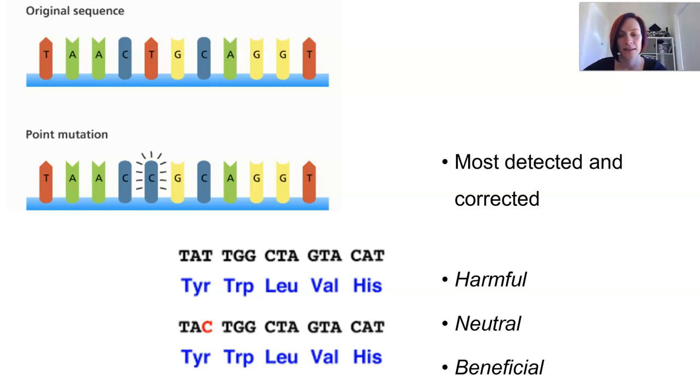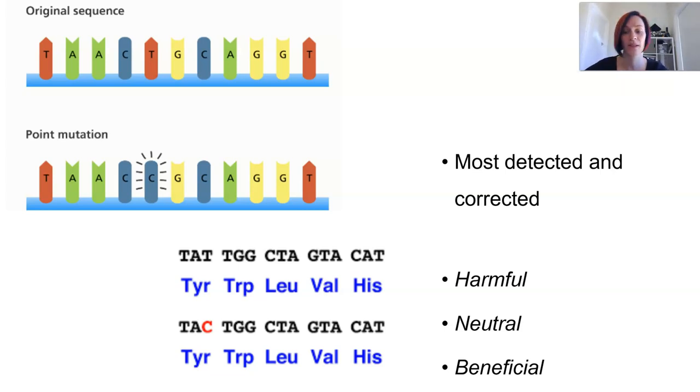There are large databases that currently exist and are added to frequently, which can help determine whether a mutation found in a human patient will be harmful or not.